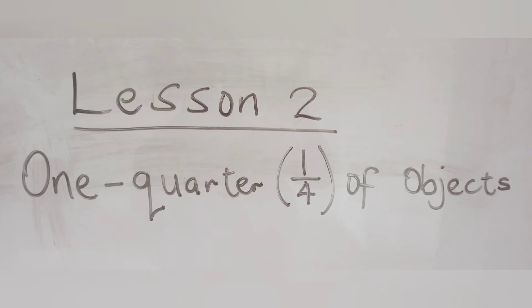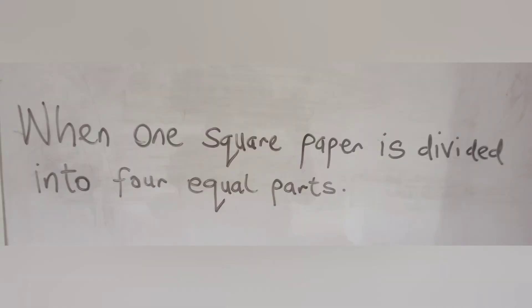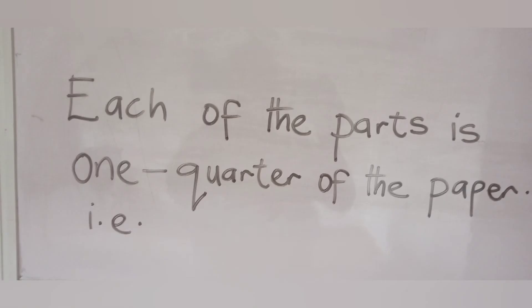Now, let's go to lesson 2. One quarter of objects. If I have a square paper and I divide it into 4 equal parts, each of the parts is called one quarter of the paper.